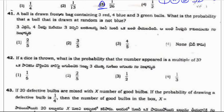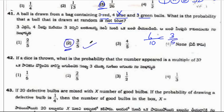A ball is drawn from a bag containing 3 red, 4 blue and 3 green balls. What is the probability that a ball drawn at random is not blue? So total balls are 3 plus 4 is 7 plus 3 is 10 balls. There are 10 balls and blue colored balls are 4. So not blue is 3 plus 3 is 6. 6 by 10 is 3 by 5. So answer is option 2.